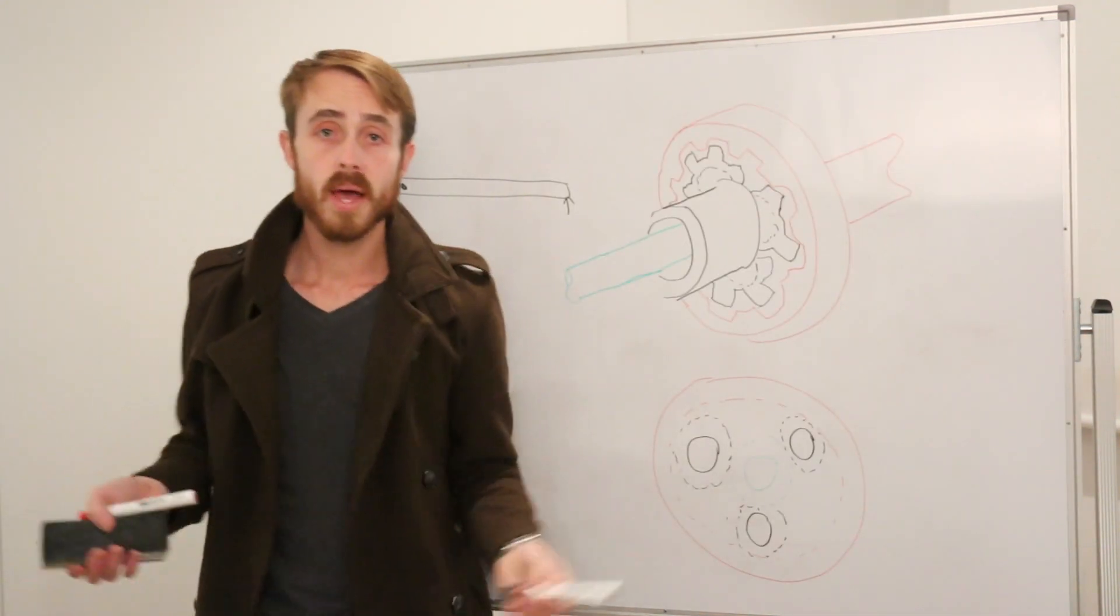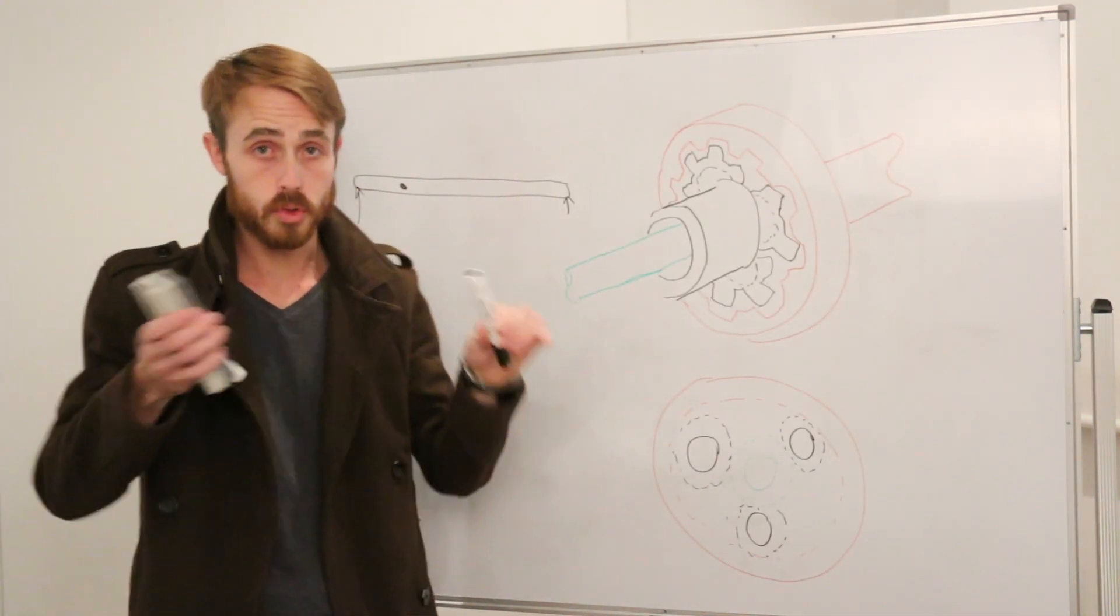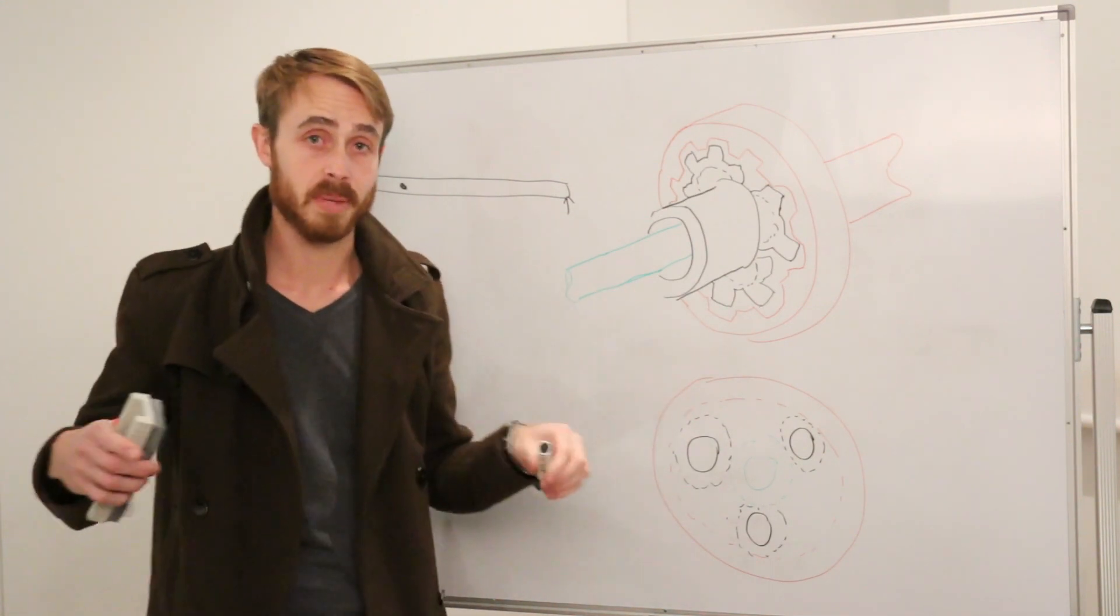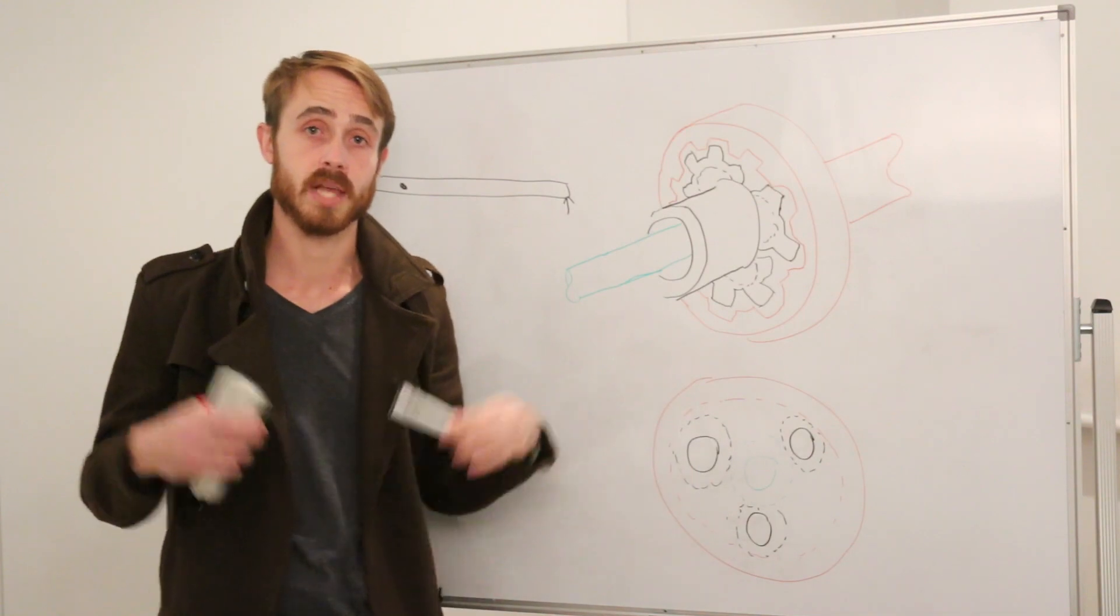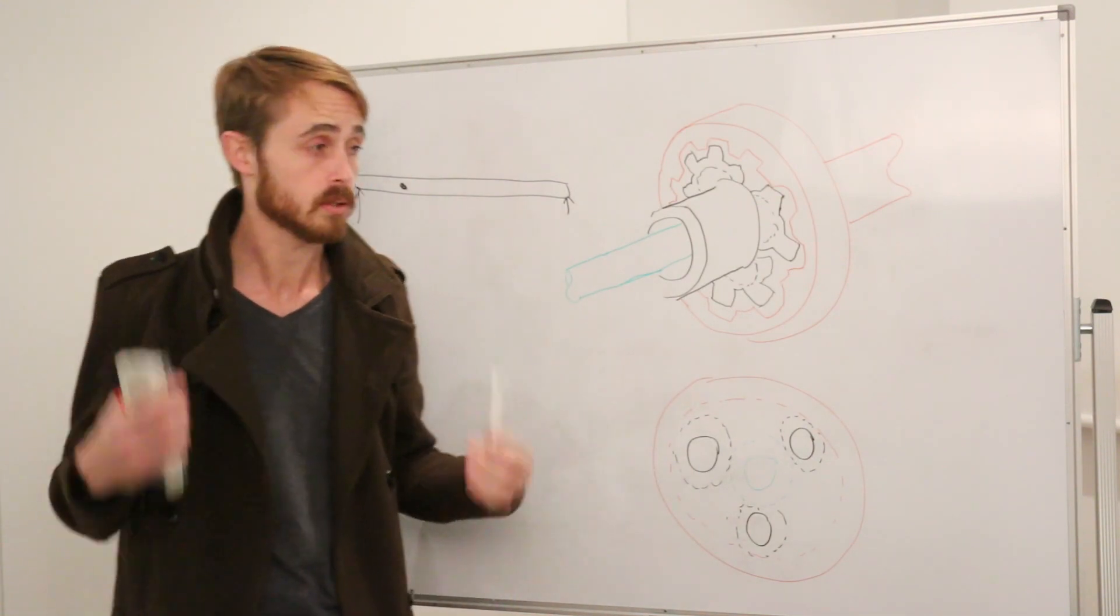So where does that come in? Well, remember how I said that you don't want to just let the front wheels spin and have an open diff in the center, because all the torque will go to the spinning wheels and you'll have no torque on the wheels that actually have traction.